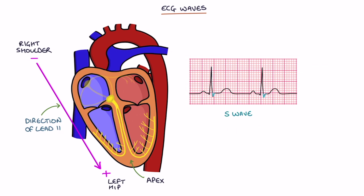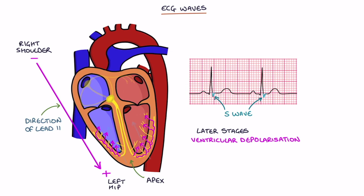The S wave represents the later stages of ventricular depolarization after the electrical impulse reaches the apex and is traveling away from the apex. This is in the complete opposite direction of lead 2, traveling overall from the left hip towards the right shoulder, so it appears as a negative downstroke.